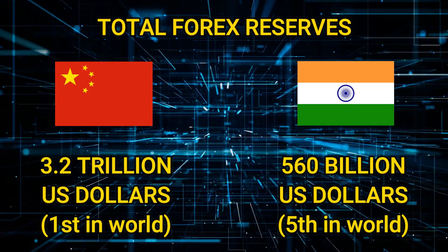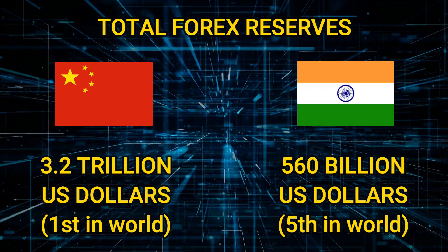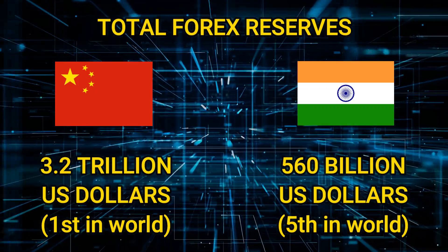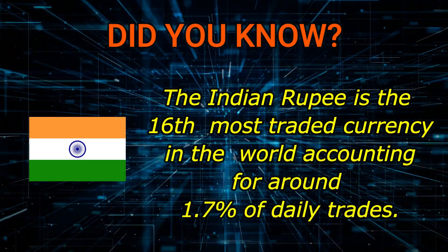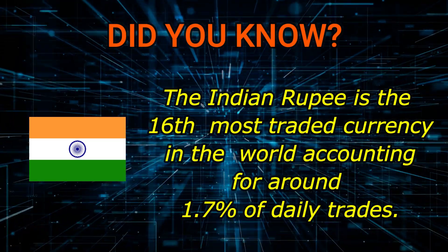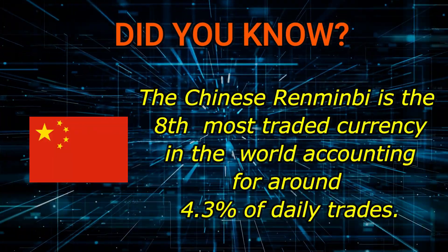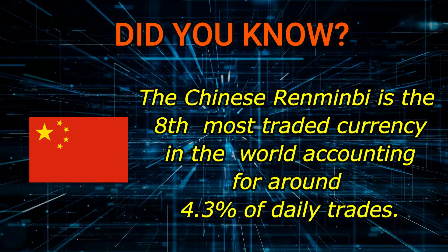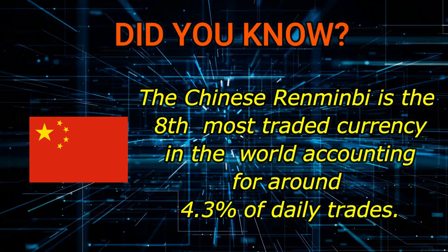Now let's talk about forex reserves in India and China. China currently has 3.2 trillion dollars, and India has approximately 560 billion US dollars. China's forex reserves are number one — the largest in the entire world — and India comes in 5th position. India's Rupee is the world's 16th most traded currency, accounting for around 1.7% of total world trades. The Chinese Yuan is the 8th most traded currency in the world, accounting for around 4.3% of daily transactions.